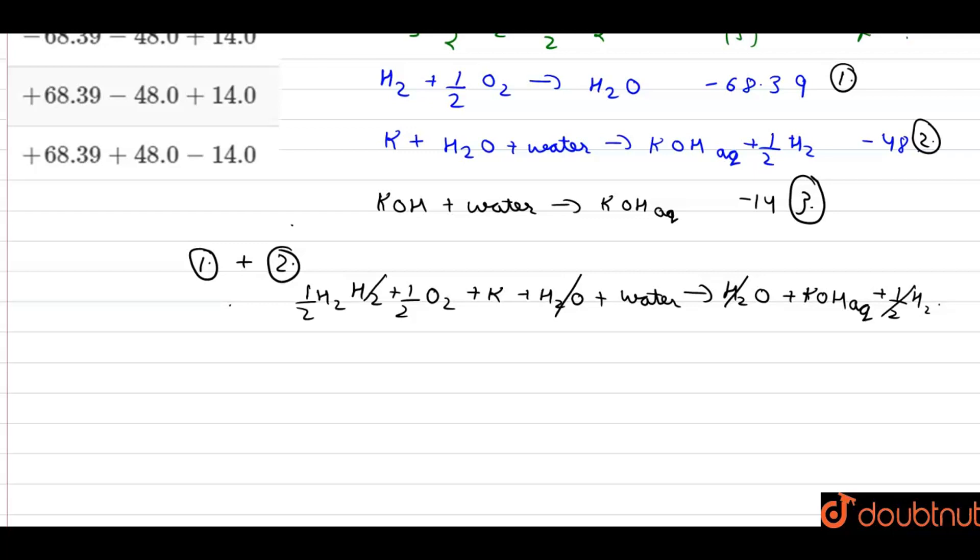Now we had 1 plus 2. Now if we minus the third equation, what remains? We have K plus half O2 plus half H2, which gives KOH, and this is our required solution.